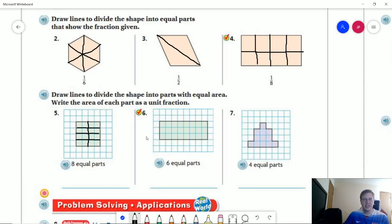Again, for number six, oh sorry, they want us to write the area of each part as a unit fraction. So we would have eight equal parts, the unit fraction would be one-eighth. For this one, it's going to be one-sixth. And for this one, it is going to be one-fourth.